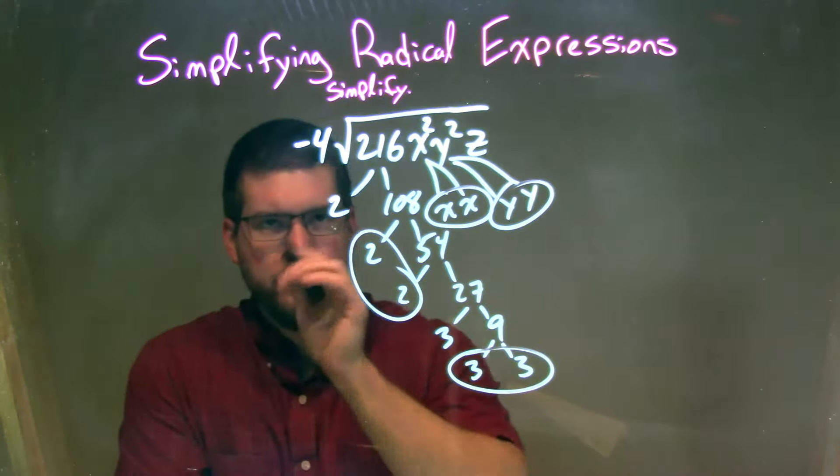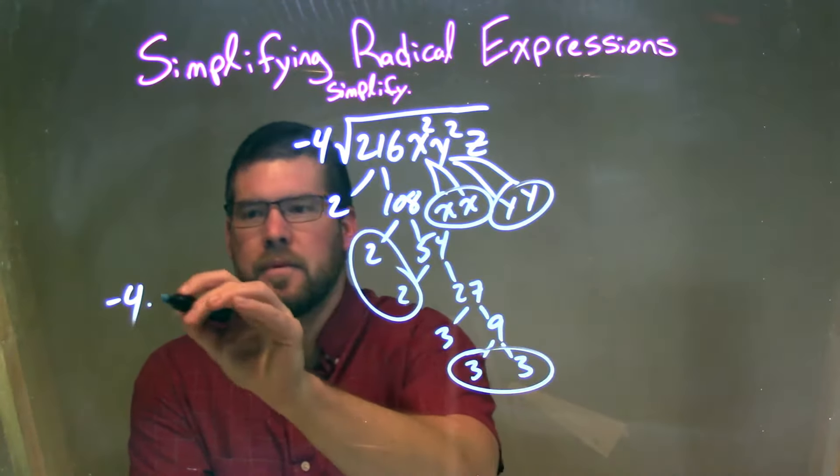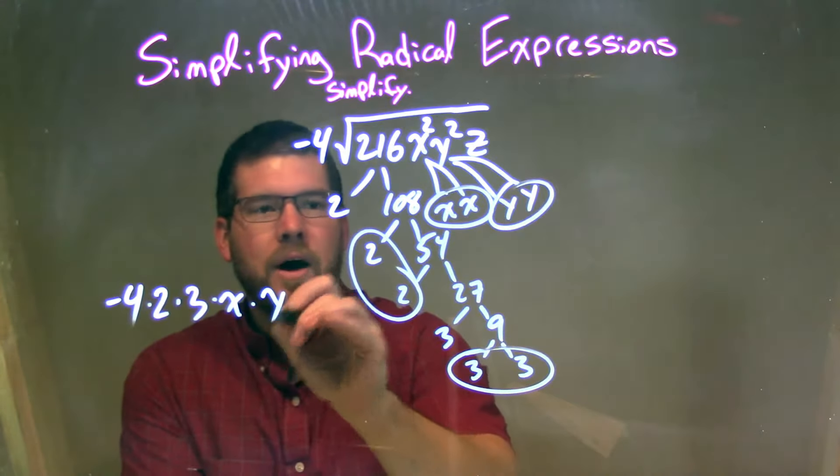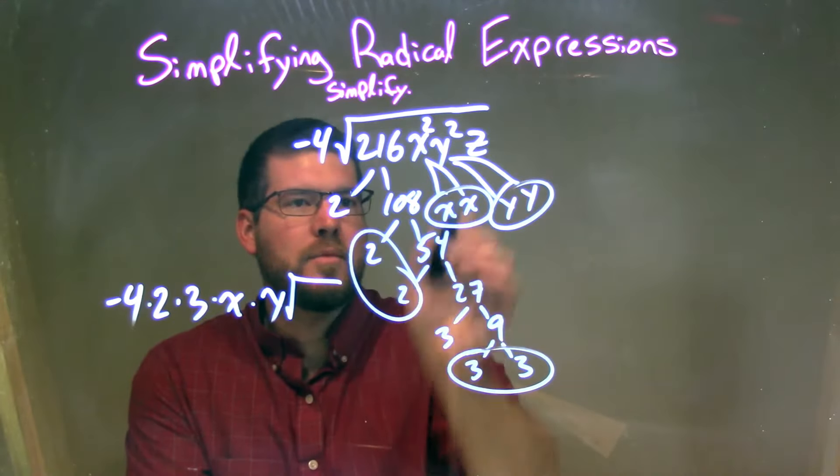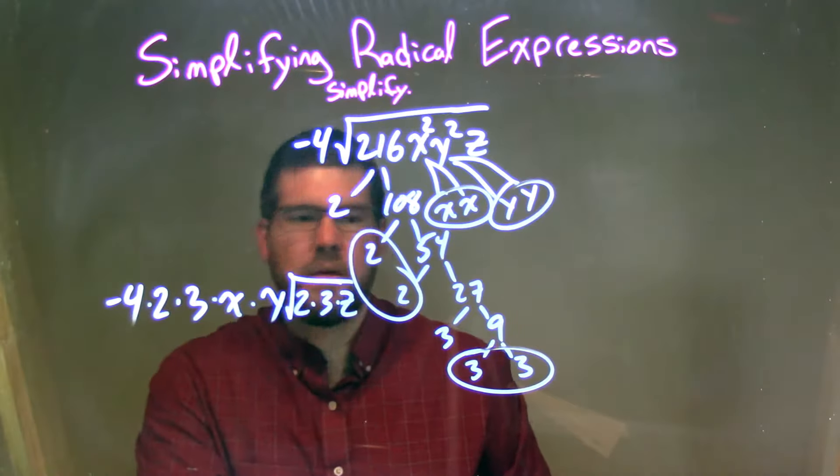So I'm going to write it over here. My negative 4 stays on the outside, and I'm going to multiply it by a single representation of each pair. 2 times 3, right there, times x times y. We stay on the square root on the inside. All the singles, 2 times 3, and then z. So 2 times 3 times z. Keep that inside square root there.